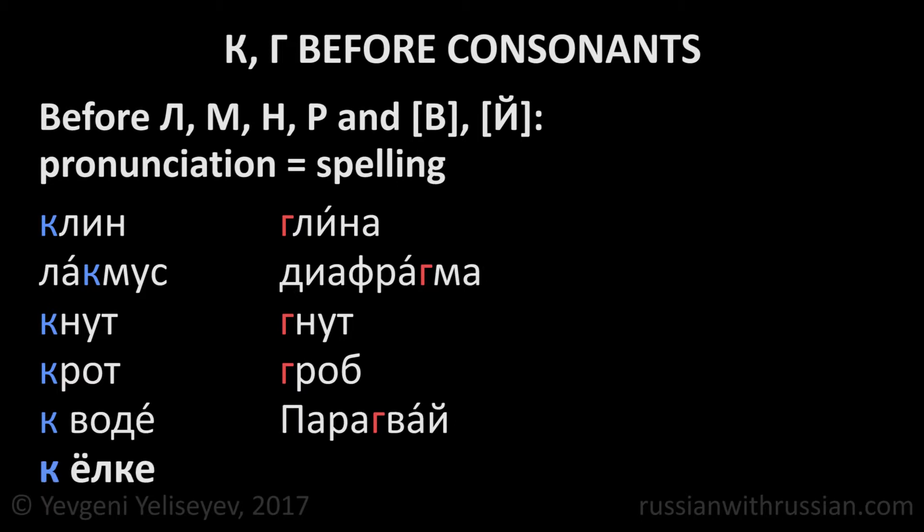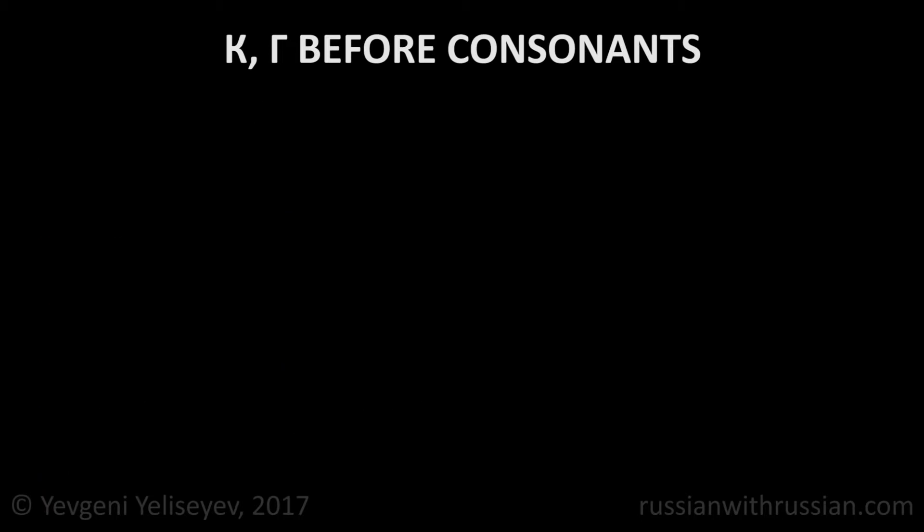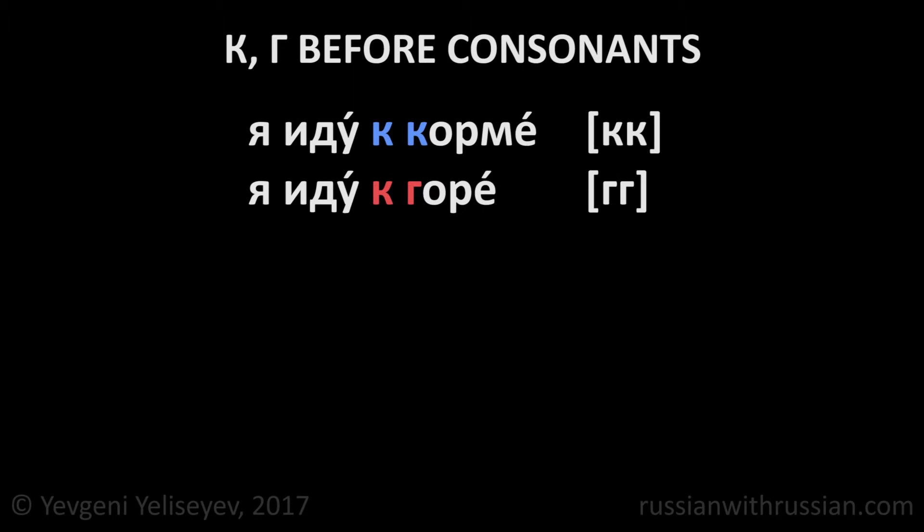When the preposition К appears before a word beginning with К or Г, we pronounce long К and Г respectively. Я иду к корме. Я иду к горе.